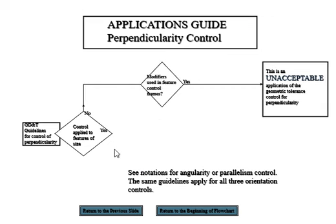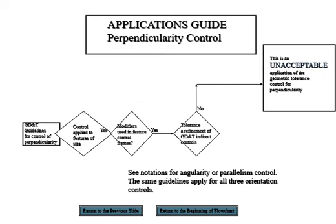Then we look at the control applied to the feature of size. If not, then apply to the feature — look at the modifier. You have the modifier, so it's not acceptable. Then we look at the modifier — you have it. Look at the tolerance — you don't have it, not acceptable, because you need tolerance in order to control the perpendicularity. Otherwise it wouldn't make sense.